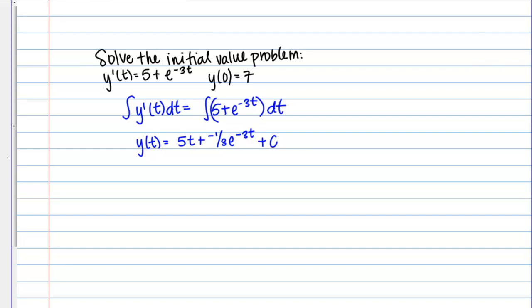The one-third you can get by u-substitution if you're not convinced of that constant out front. This is the general solution, but like I said before, this initial condition is going to allow us to find a particular solution.